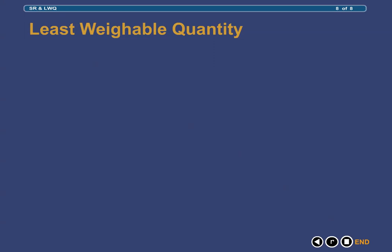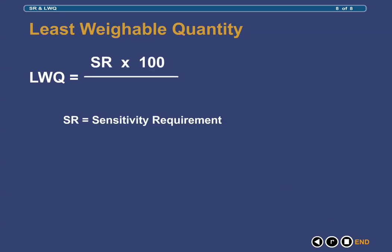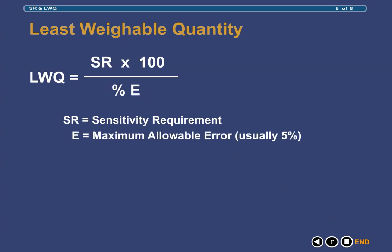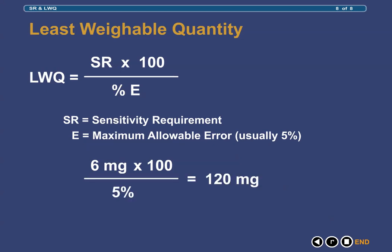Once you have performed the sensitivity requirement testing and you know the sensitivity requirement of your balance, you can then calculate the least weighable quantity using the equation where sR is the sensitivity requirement of the balance and %E is the maximum percent error allowed in weighing, typically accepted to be 5%. Applying this equation using the sensitivity requirement of 6 mg and a maximum error of 5%, the least weighable quantity calculates to be 120 mg. In other words, the minimum amount of product that can be weighed out on a Class III torsion balance with a sensitivity requirement of 6 mg and not exceed a 5% margin of error in weighing is 120 mg.